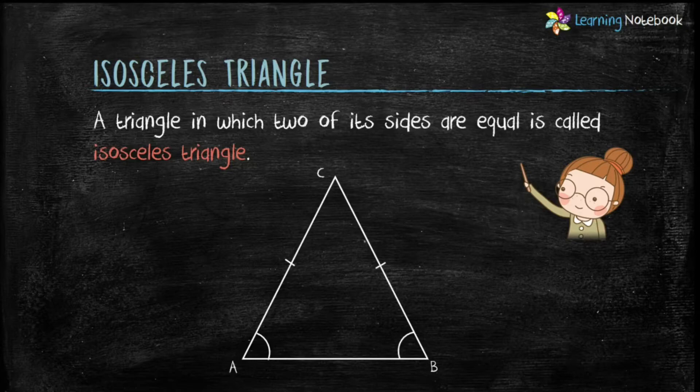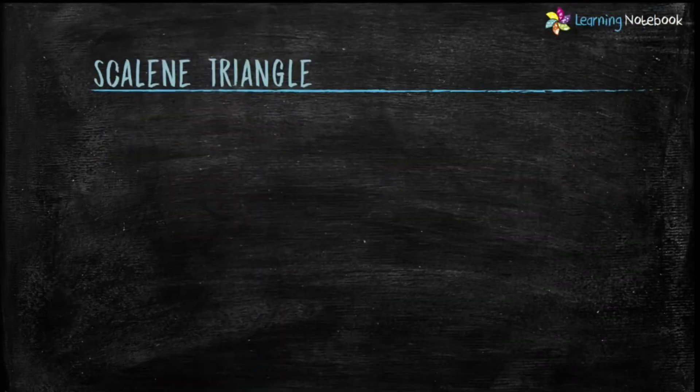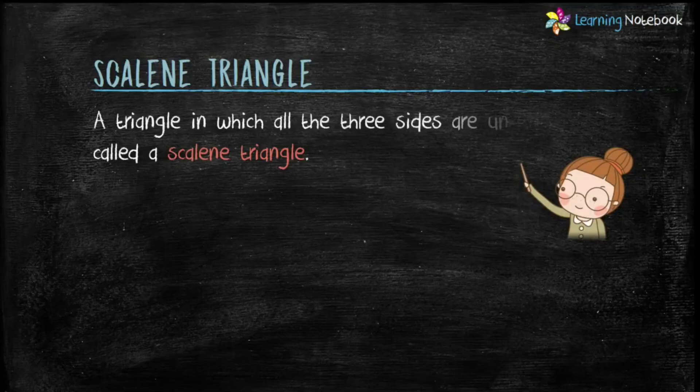Here triangle ABC is an isosceles triangle because AC equals CB. The third type of triangle is scalene triangle.